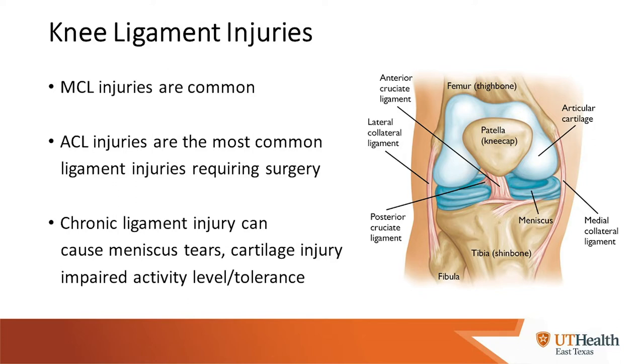When the knee is unstable — meaning it has lost its ligamentous stability — the knee undergoes abnormal motion. That can cause the meniscus to tear, cartilage to wear and become thinner, and people may avoid activities they would normally undertake such as sports, pivoting activities, and even normal activities like stepping off a curb or walking on uneven ground.